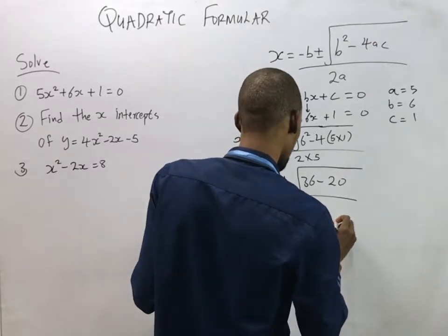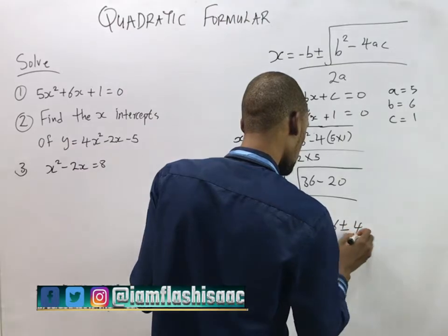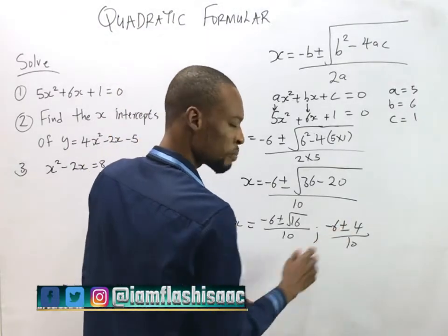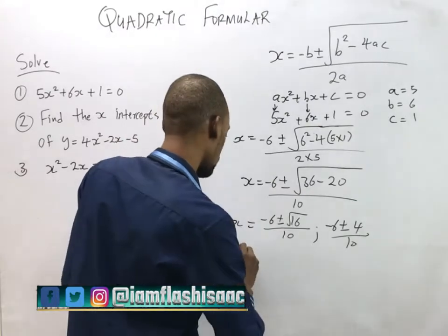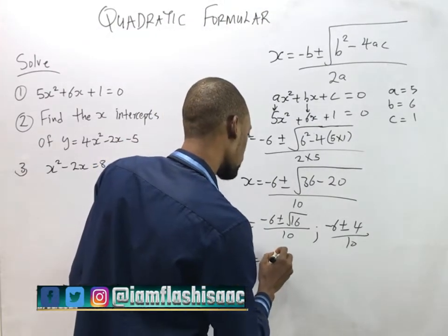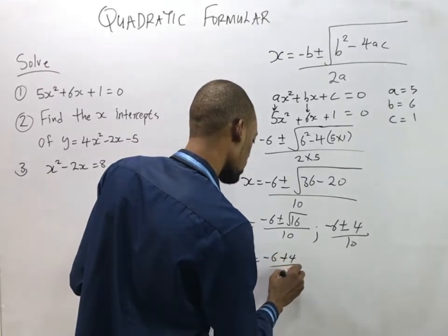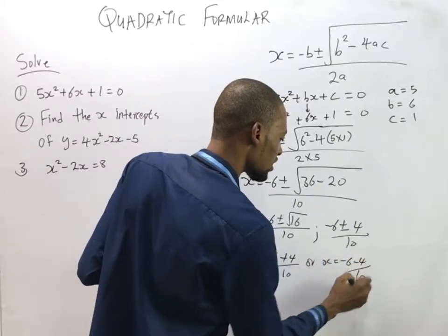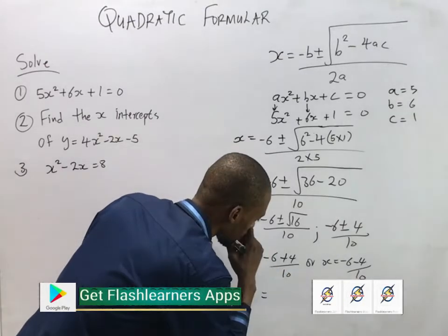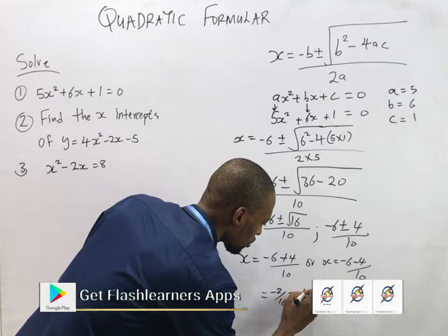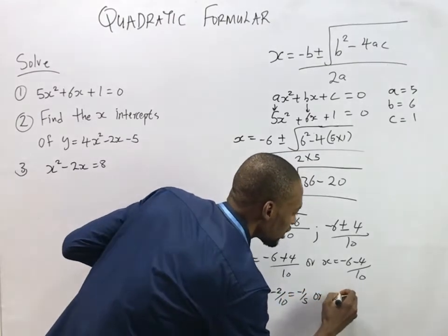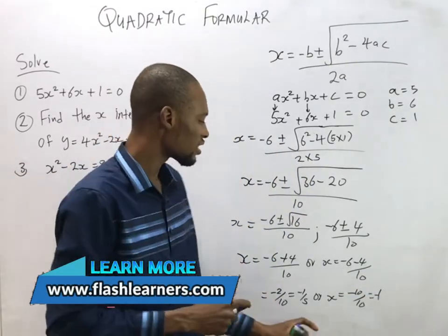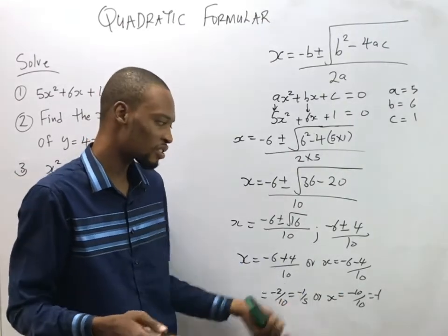The square root of 16 is 4, so s equals minus 6 plus or minus 4, over 10. Now separating the plus or minus into its two components: s equals minus 6 plus 4 over 10, or s equals minus 6 minus 4 over 10. So s equals minus 2 over 10, which is minus 1 over 5, or s equals minus 10 over 10, which is minus 1.